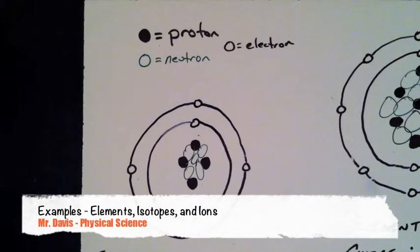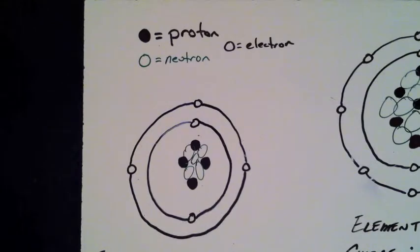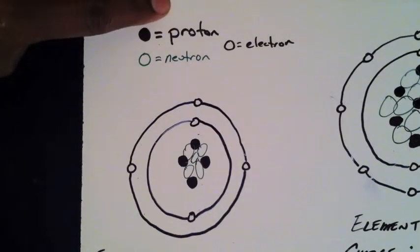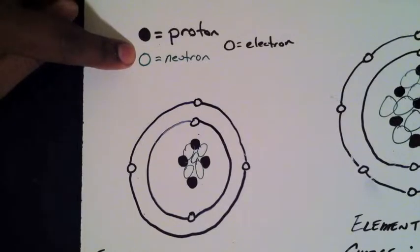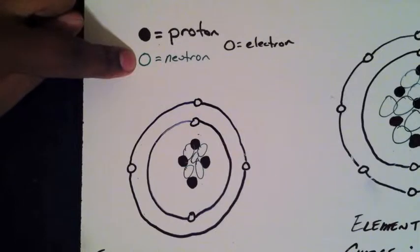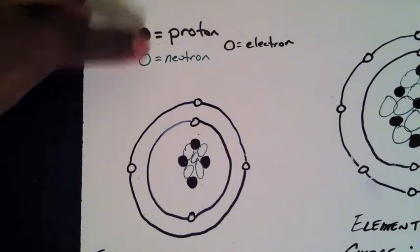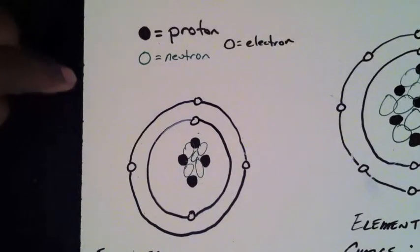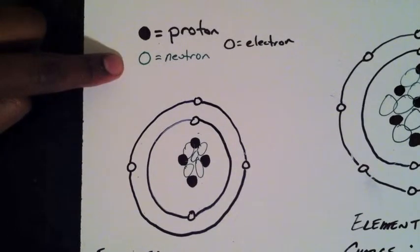This video goes along with the elements, isotopes, and ions lecture. I am going to show you some examples of how to identify elements based on our previous knowledge and how to identify isotopes as well as ions. Remember, protons have a positive charge, neutrons have no charge — they are represented in the drawings by a solid dot and a green circle — and our electrons, which have a negative charge, are represented by a black circle. Protons and neutrons are located in the nucleus and the electrons travel around the nucleus.